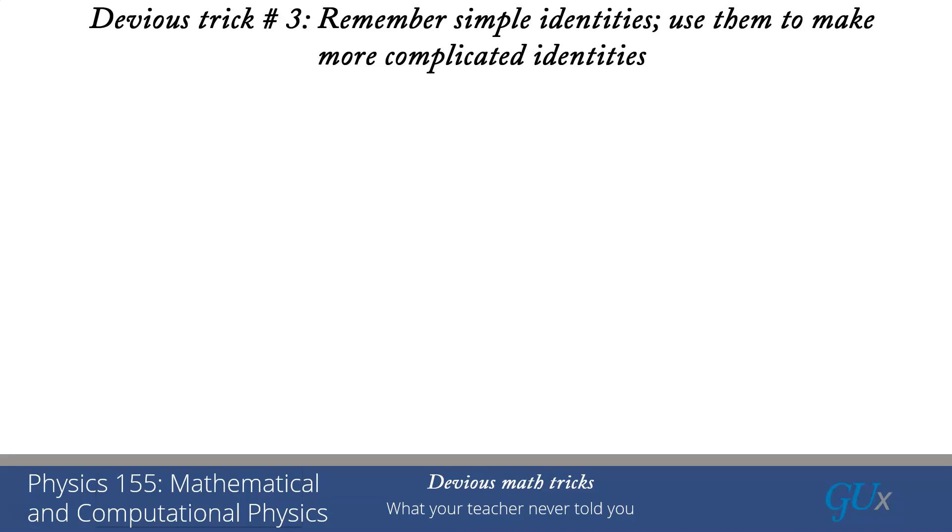Devious trick number three. Remember the simple identities. I'm going to give you 10 simple identities to remember at the end of this lecture. And use them to make more complicated identities. This is not an exact science, but it is something that you really can get used to doing with practice once your eyes have been opened.